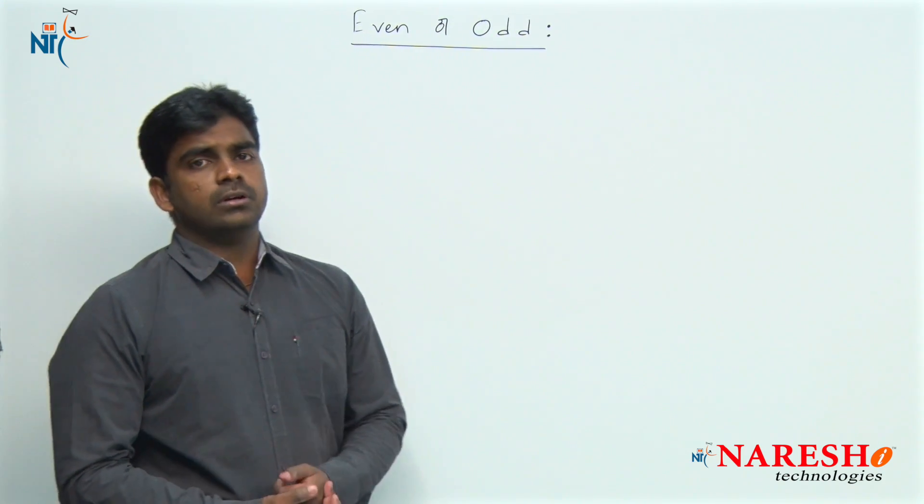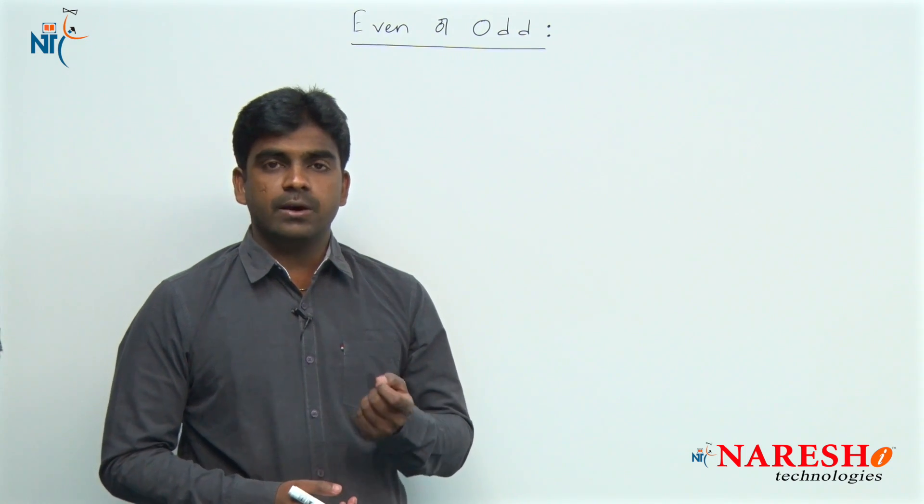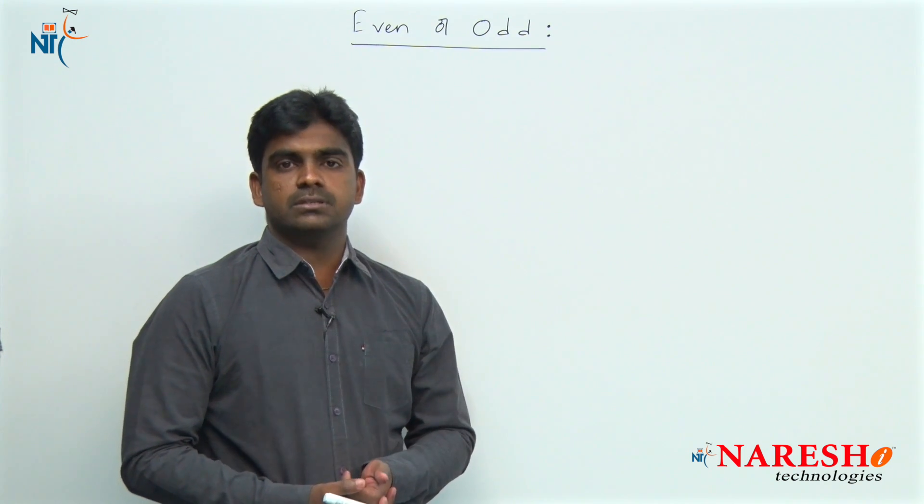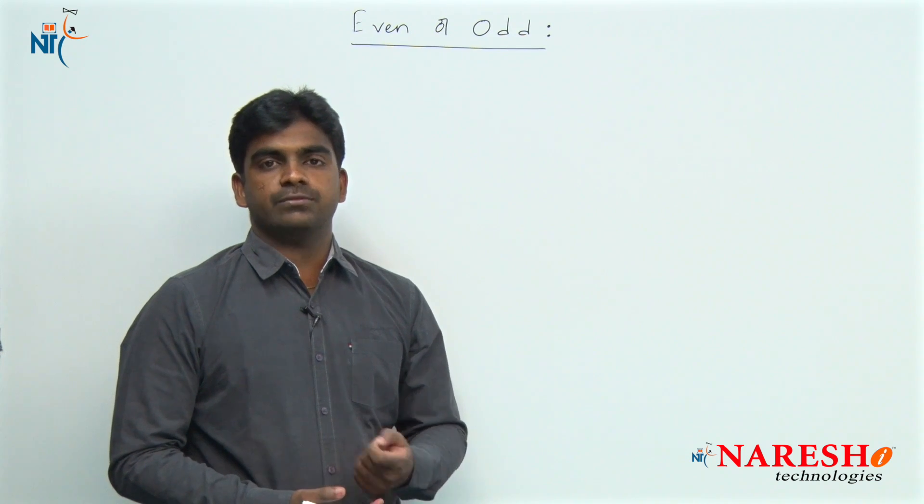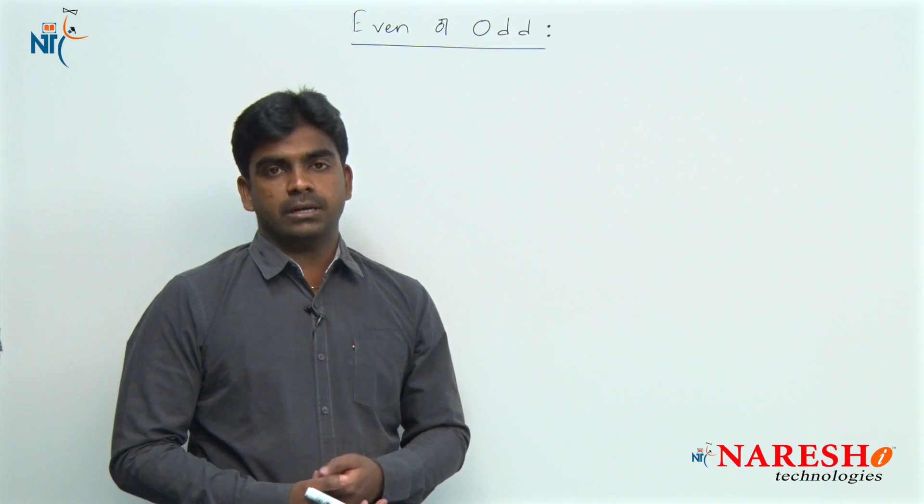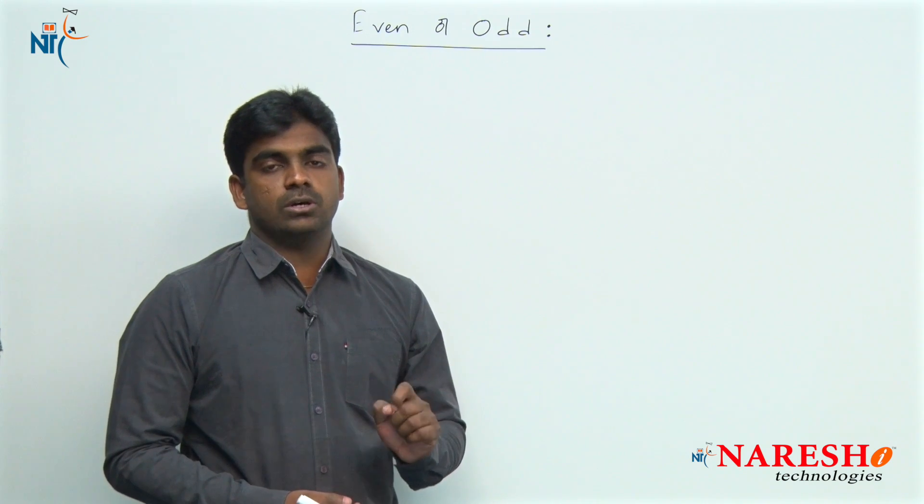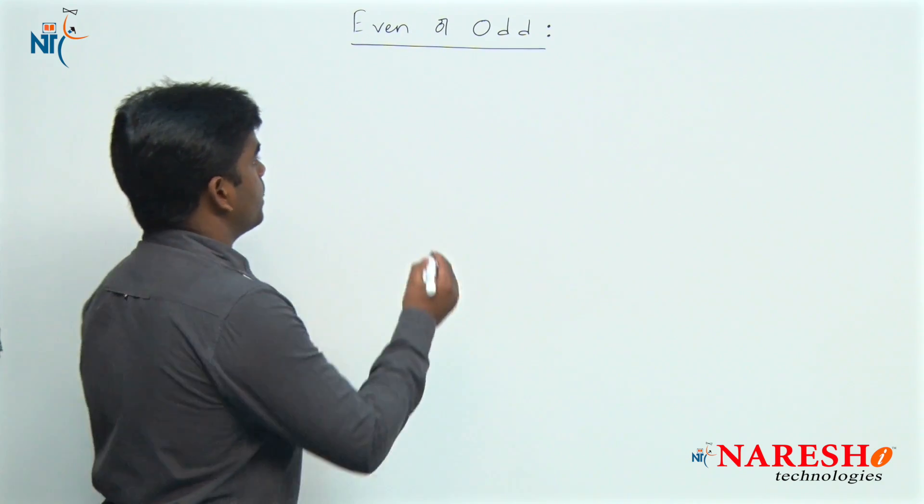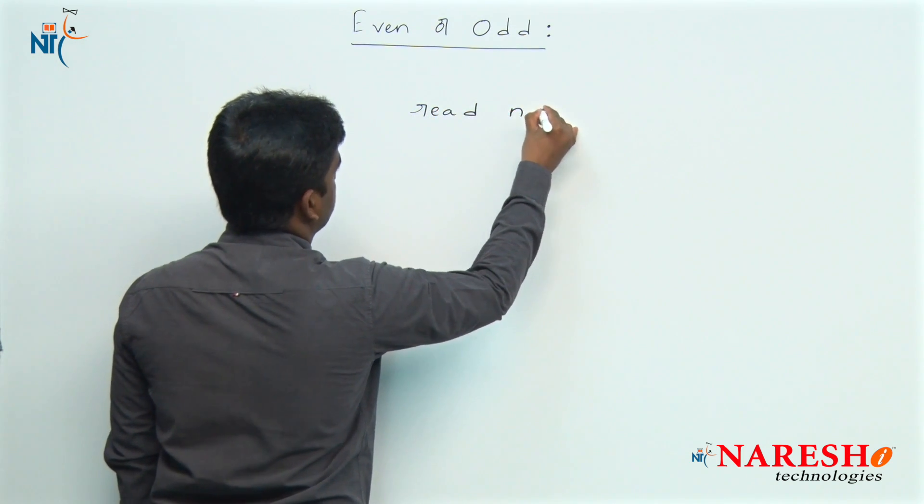First of all, if you want to find out whether a number is even or odd, first we have to read one number in any programming language. For example, in C language we use printf and scanf functions to read, in Java we use a scanner. Whatever the programming language, the concept is the logic as well as the flow. First we need to read n value.